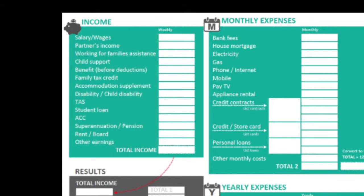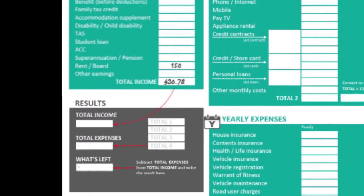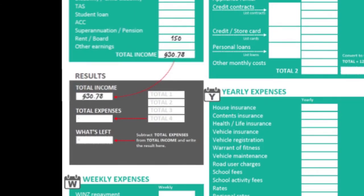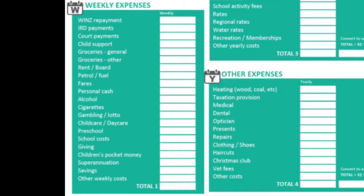So for example, here is my total income. Next, weekly expenses — this is where you have to start considering your day-to-day lifestyle a bit more. So let's say I pay this much in IRD payments, this much for groceries, rent, petrol, cigarettes, preschool, and other weekly costs such as personal shopping. Let's write down the total here.